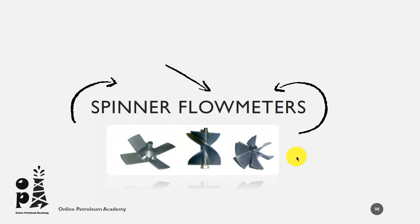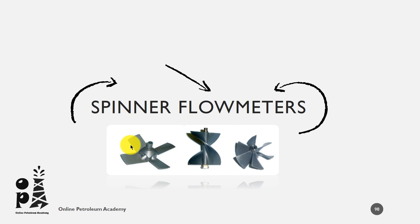The actual spinners used in production logging flow meters are shown here. The spinner on the left is known as the blade type and it contains many advantages that make it very useful in real applications. First, the blades can collapse or close like a flower when the tool is in reduced diameters. Secondly, when it opens, the blade diameter will typically be considerably larger than the other types of spinners.